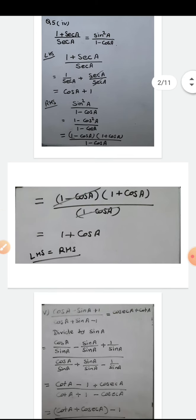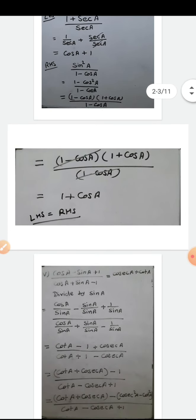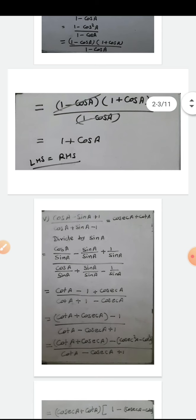Next is the fifth part. Fifth part: (cos A - sin A + 1) / (cos A + sin A - 1) = cosec A + cot A. In this question we have taken the left hand side first. The left hand side is (cos A - sin A + 1) / (cos A + sin A - 1).